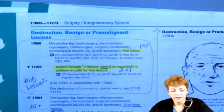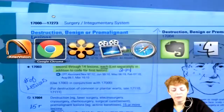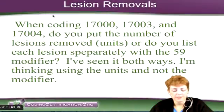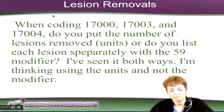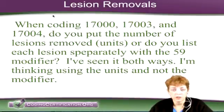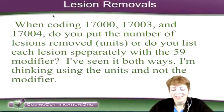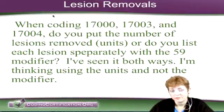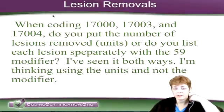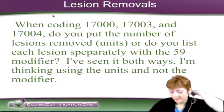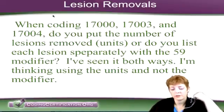As far as the 59 modifier goes, that would be a payer preference. Because you're going to have them listed as units — if you have 2 lesions, you have 1 unit of 17000 and 1 unit of 17003. I don't think 59 would really apply because it's an add-on code. Unless the payer has specifically told you to do it a different way, I don't think it's necessary.